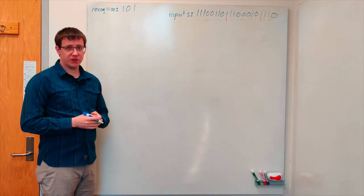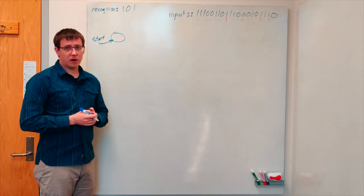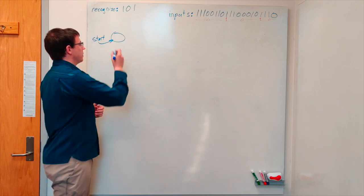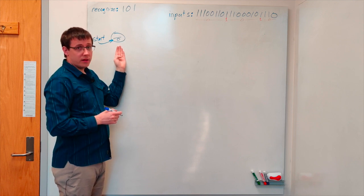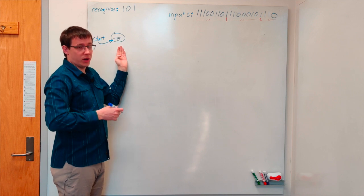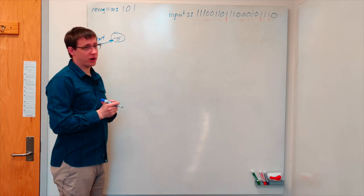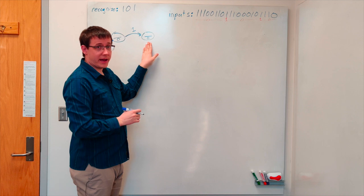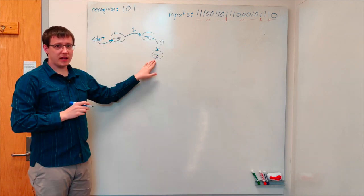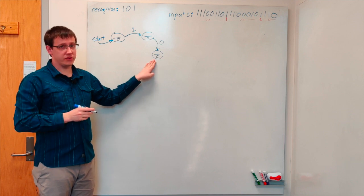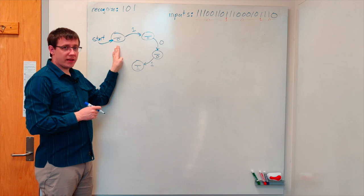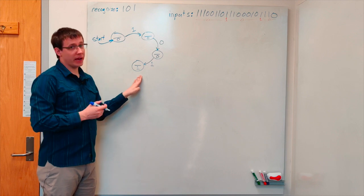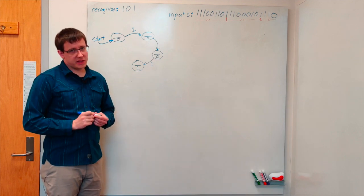We always begin building a finite state machine with a start state. In the start state, our machine hasn't seen any inputs yet, so it certainly hasn't seen the input one, zero, one, so it should output zero. If our finite state machine is in the start state and it sees a one, then that's making progress towards the case where we want to output a one, so we should transition to a new state indicating that progress. If from this state we see a zero, we want to remember that so we can transition to yet another state — we're still outputting zero because we have not yet seen the sequence one, zero, one. Let's give these states some labels to make them easier to talk about.